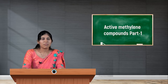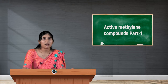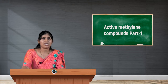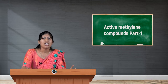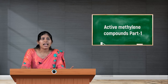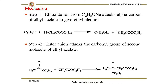The mechanism involves three steps. In the first step, sodium ethoxide provides the ethoxide ion, which removes a proton from one molecule of ethyl acetate. As a result, generation of a carbanion takes place on one of the ethyl acetate molecules.